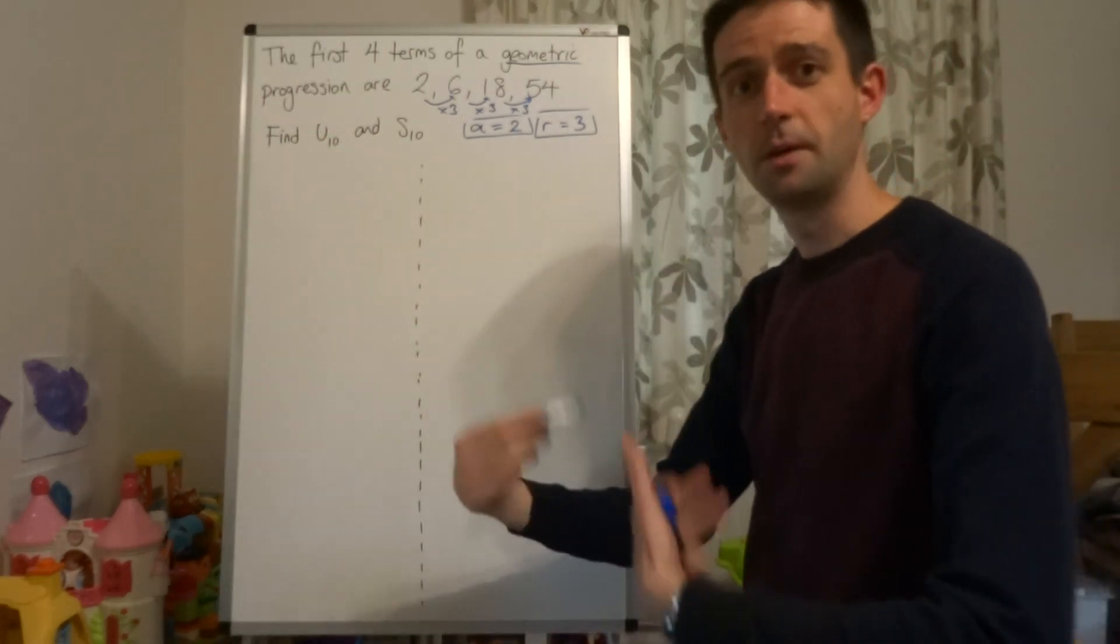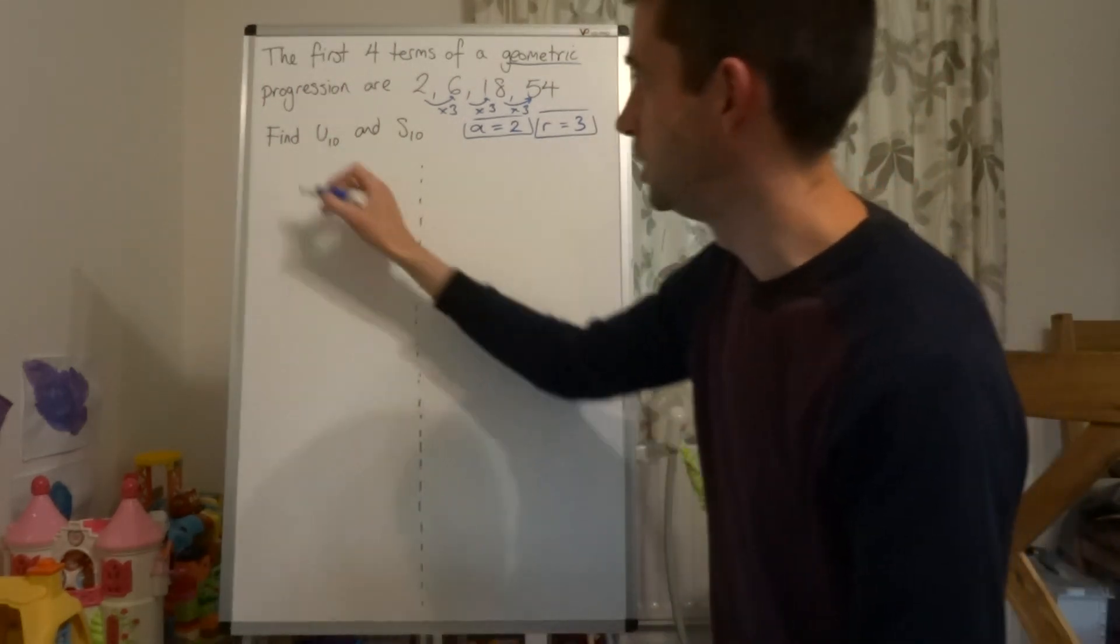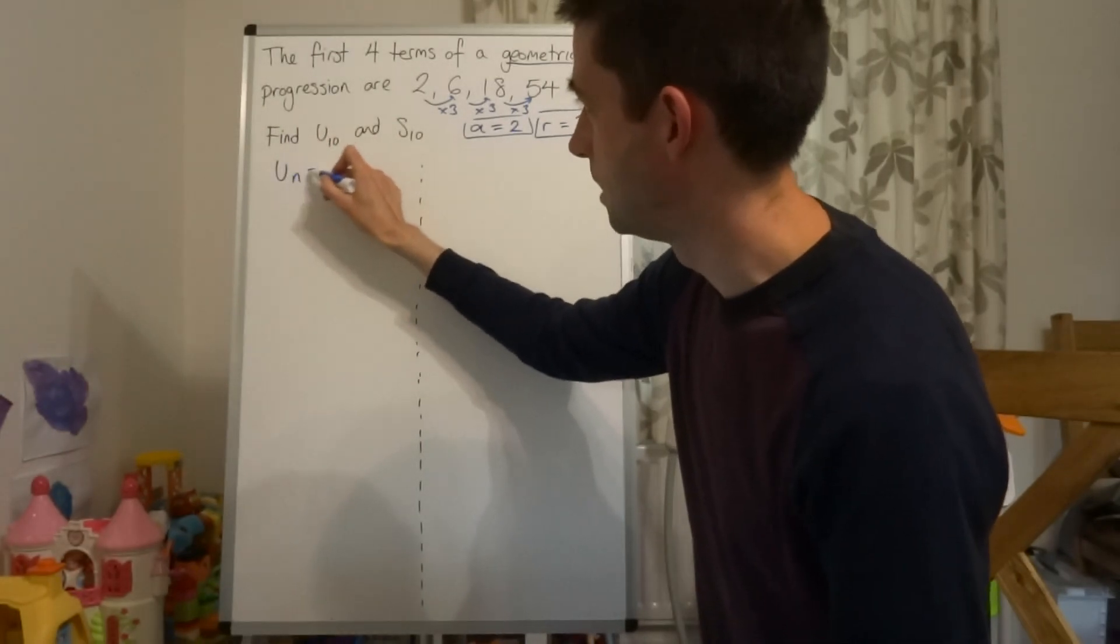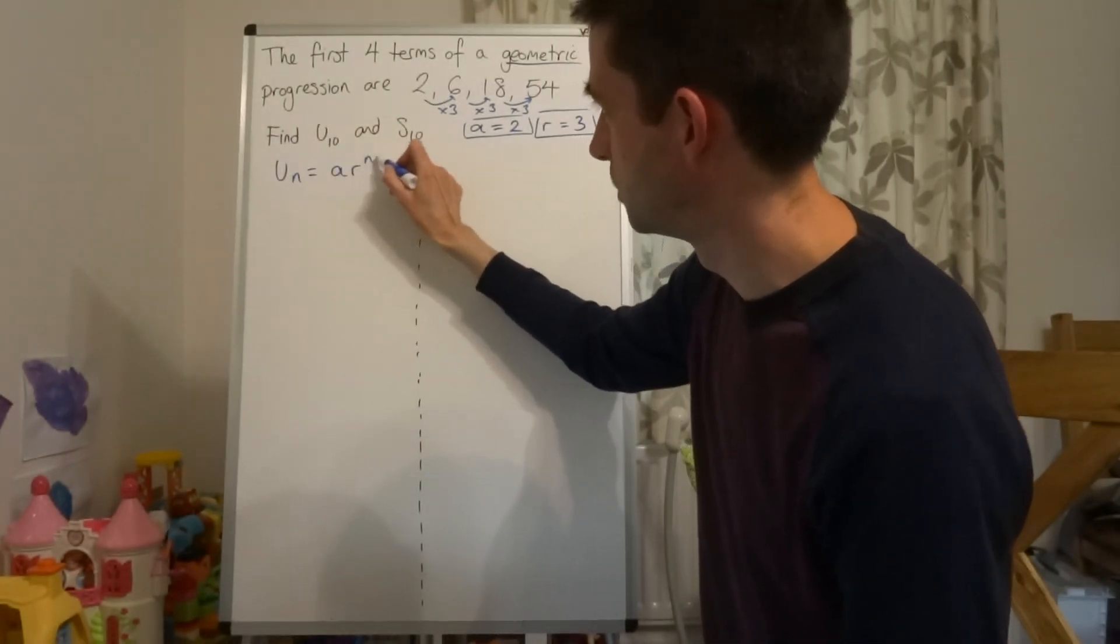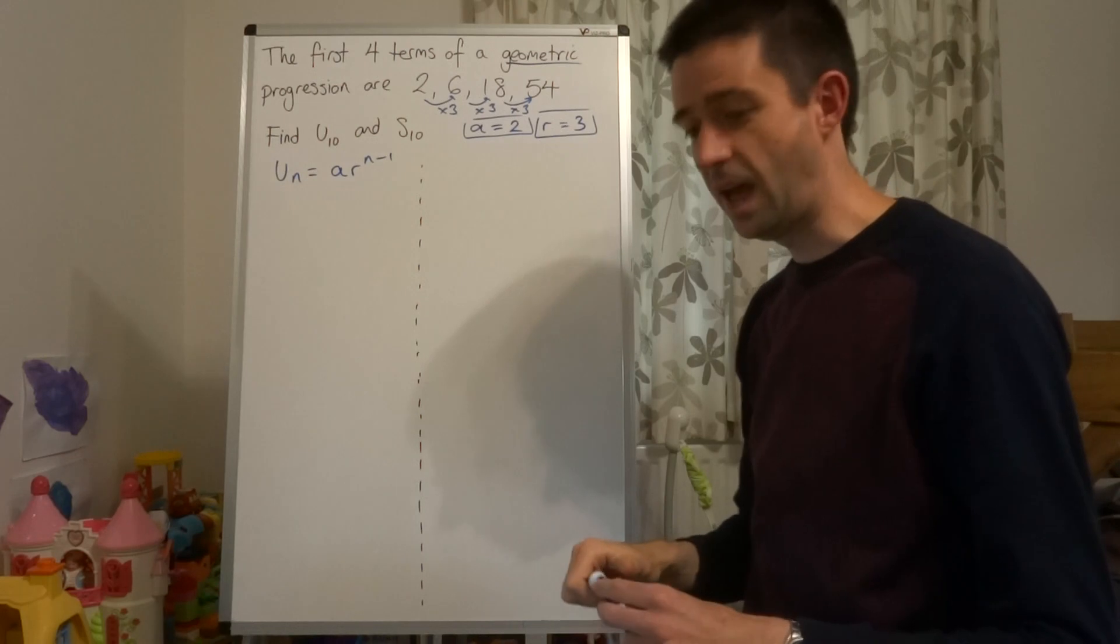U10 - that is the tenth term. For a term, we use the formula UN equals A multiplied by R to the power of N minus 1.